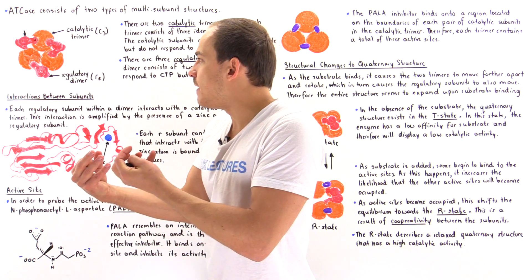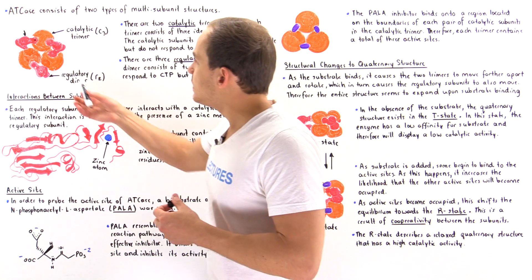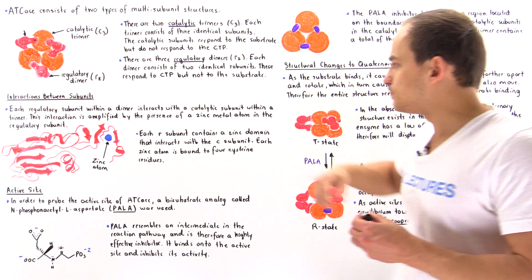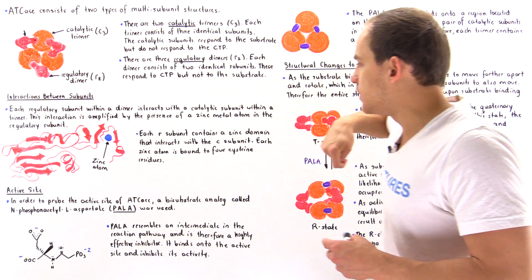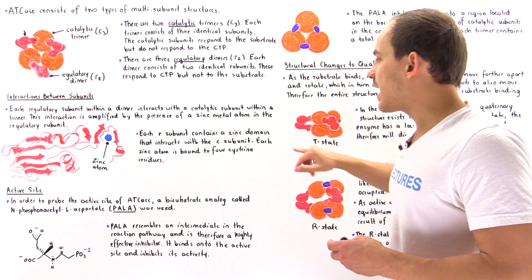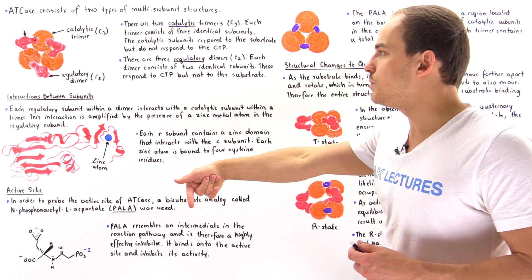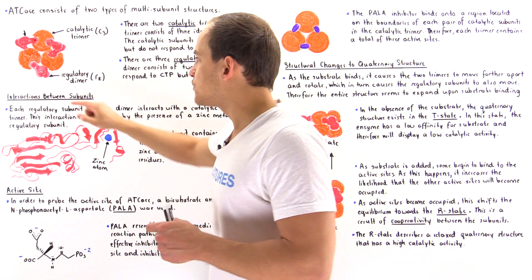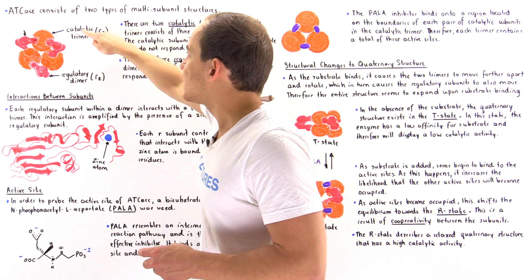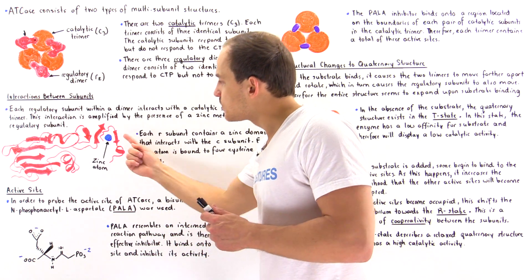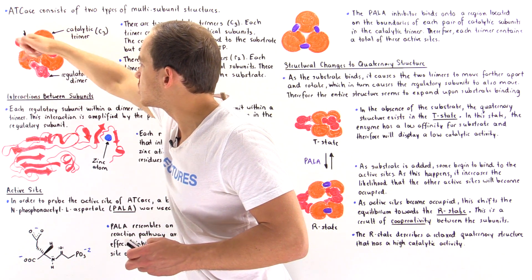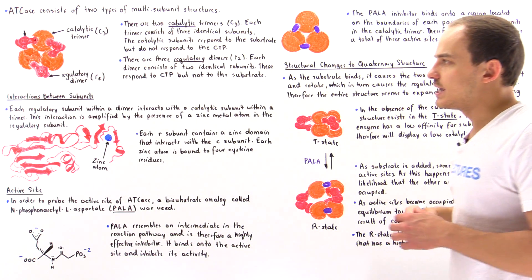That zinc atom amplifies — makes better — the interaction between the orange catalytic chain and the red regulatory chain. Each regulatory subunit contains a zinc domain that contains the zinc metal atom, which interacts with the catalytic subunit. So each red regulatory chain in the dimer interacts with one catalytic chain in the trimer via this metal atom present at the interface of each regulatory chain.